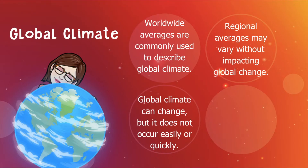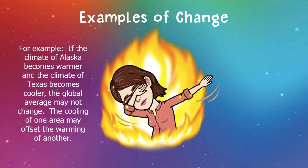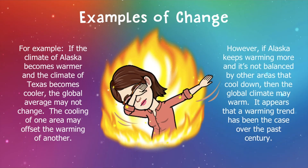For example, if the climate of Alaska becomes warmer and the climate of Texas becomes cooler, the global average may not change — the cooling of one area may offset the warming of another. However, if Alaska keeps warming and it's not balanced by other areas that cool down, then the global climate may warm. It does appear that a warming trend has been the case over the past century, which is the past hundred years.